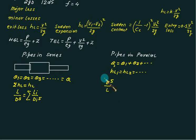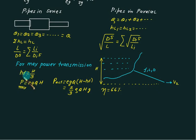For maximum transmission, we have a reservoir and a penstock. The condition for maximum transmission is hf equals h/3.